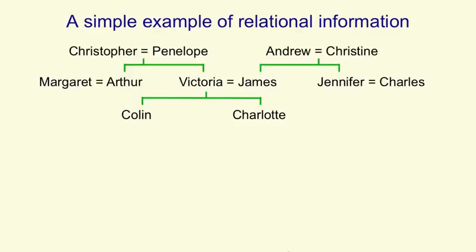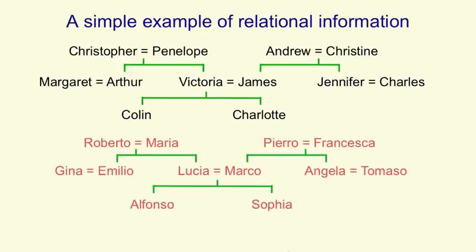This diagram shows a simple family tree in which, for example, Christopher and Penelope marry and have children Arthur and Victoria. What we'd like is to train a neural network to understand the information in this family tree. We've also given it another family tree of Italian people, which has pretty much the same structure as the English tree. And perhaps when it tries to learn both sets of facts, the neural net is going to be able to take advantage of that analogy.